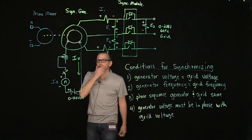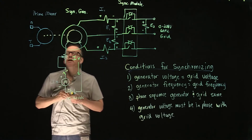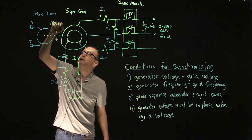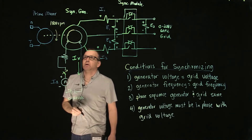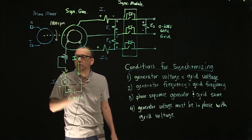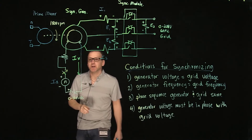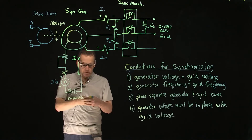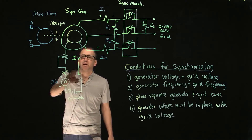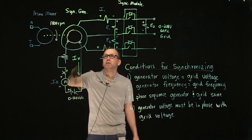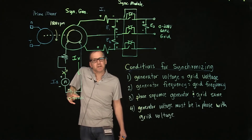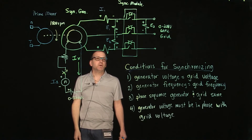The first thing we want to do is bring our prime mover up to rated speed, which in our case is 1800 RPM. Once the generator is running at rated speed, we can close the excitation switch. We can then adjust the output voltage by controlling the rheostat or the variable DC voltage to control the excitation current, which will change the output voltage.